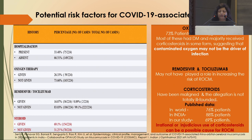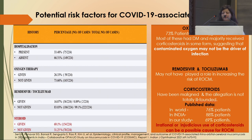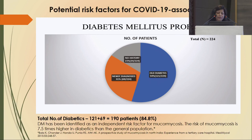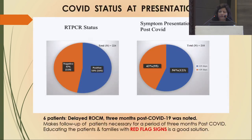Majority of patients received corticosteroids, suggesting contaminated oxygen may not be the primary driver of infection. Irrational and injudicious use of corticosteroids was a possible cause of ROCM. The total number of diabetics seen was 190 — 121 were known diabetics, while 69 reported diabetes for the first time during the illness. Remdesivir and tocilizumab were also considered as potential risk factors.